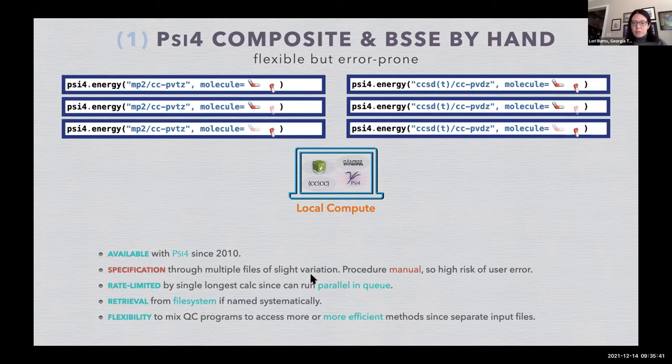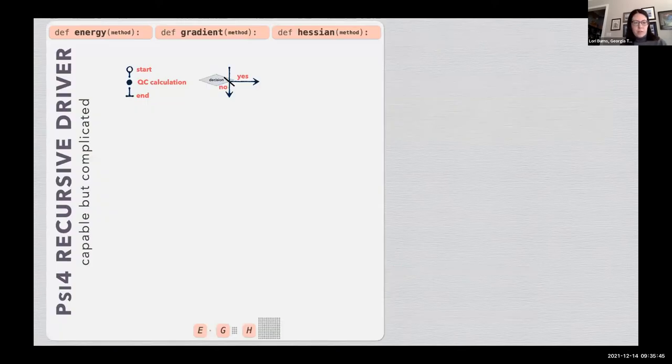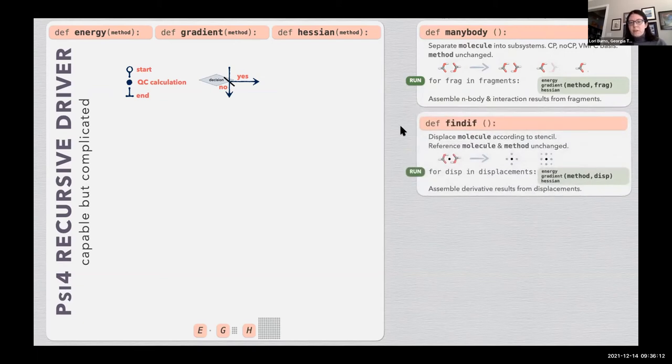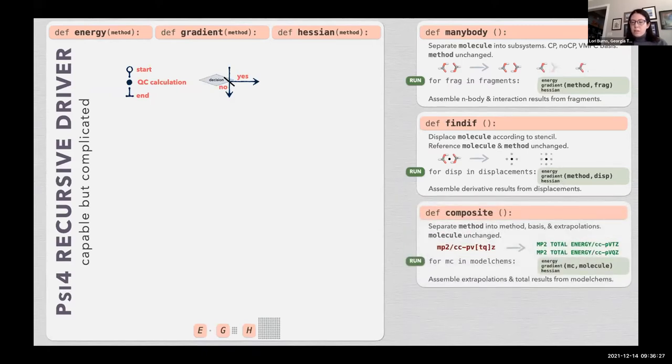To overcome this in Psi4, we developed a recursive driver where you take the energy, gradient, or hessian commands and then have additional functions like a many-body function that separates a molecule from the whole fragment into various sub-fragments and then runs the driver again on those. A finite difference for derivatives to take the equilibrium geometry and move that into various displacements in order to run energies on each of the displacements. A composite command in order to take the string of a composite input and determine what individual calculations you need to run from each of those.